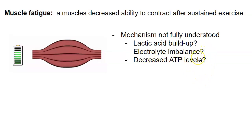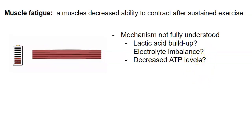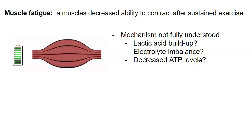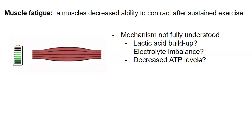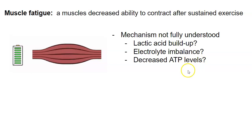Electrolyte imbalance is also thought to play a role — electrolytes being like sodium, potassium, and specifically calcium ion — and then decreased levels of ATP.